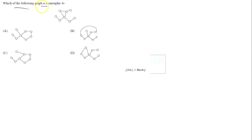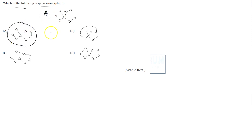Let's see which of the following graphs is isomorphic to the given graph. There is a slight mistake in the diagram, so let me clarify: this graph here is the question graph, and these are options A, B, C, and D. We need to find which graph is isomorphic to the question graph.